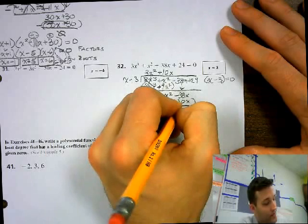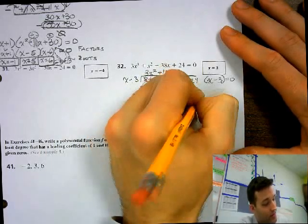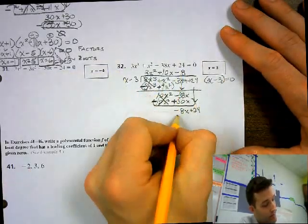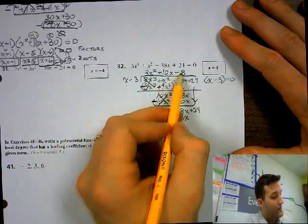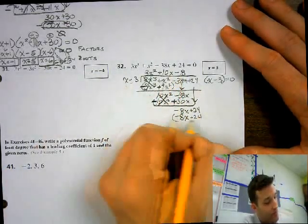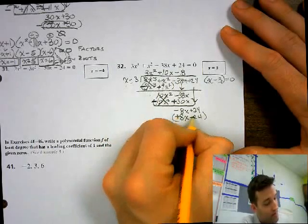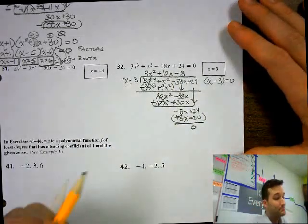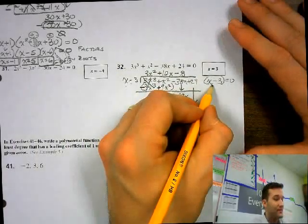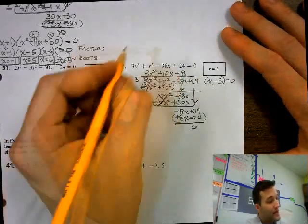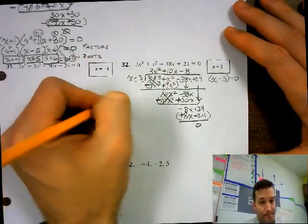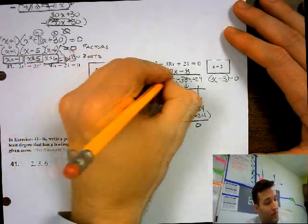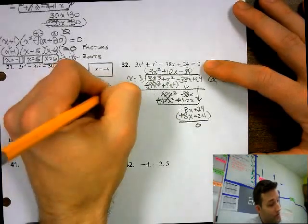Bring down your 24. Minus 8 times x is minus 8x. Negative 8x. And then you have negative 8 times negative 3, which is positive 24. When you subtract, you can switch all of your signs. This cancels to 0. This cancels to 0. You have a remainder of 0, which means that x minus 3 is a real factor — it's a true factor. So you're going to take your x minus 3 factor, and you're going to multiply that by your quotient here. So this is 3x squared plus 10x minus 8. All of that will equal 0.